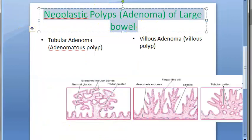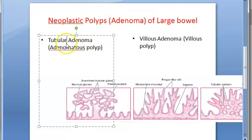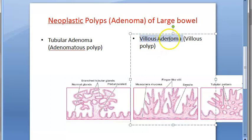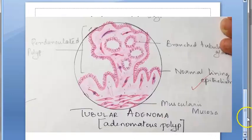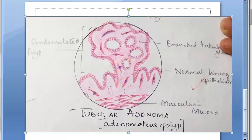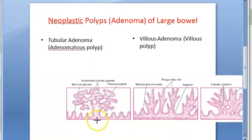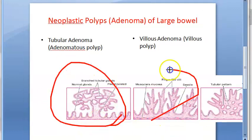We are looking at the neoplastic polyps of the large bowel. There are two main types: tubular adenoma and villous adenoma. Adenomatous polyp refers to tubular adenoma. Tubular adenoma appears round and spherical, while villous adenoma has finger-like projections.